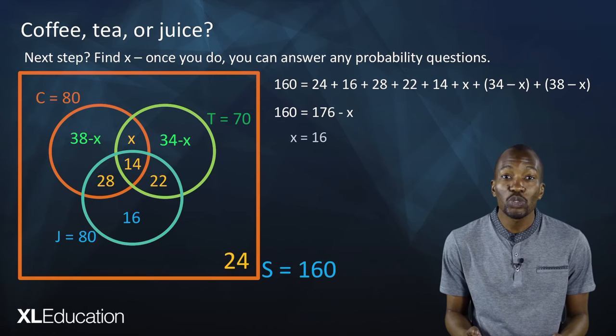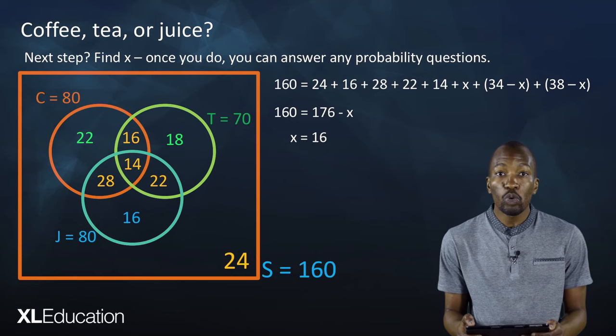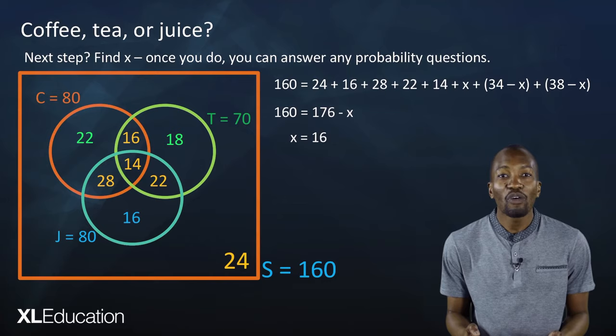We replace x with 16. The number of people who drink only coffee is 22, and the number of people who drink only tea is 18.